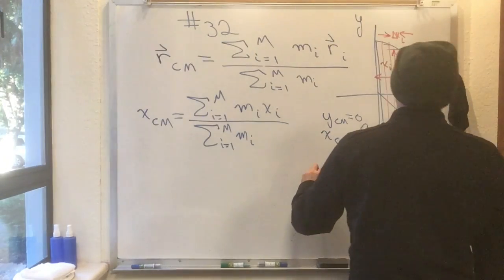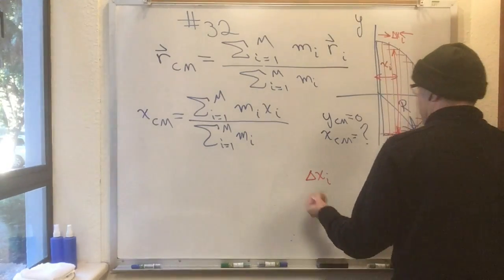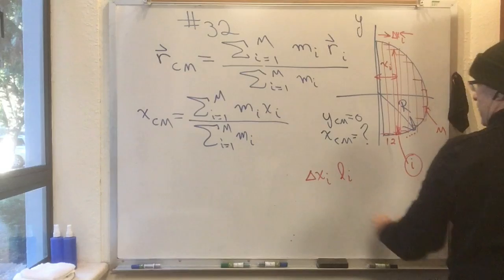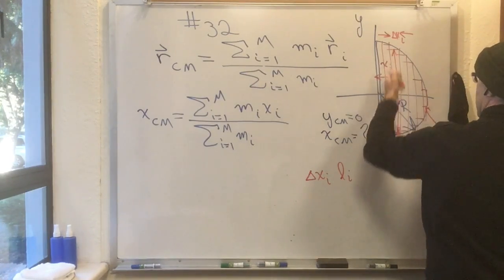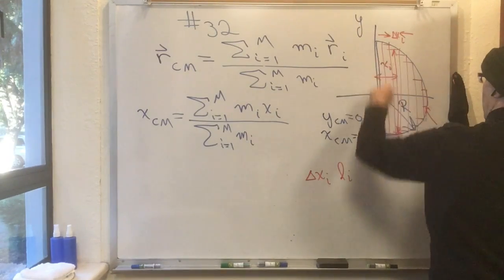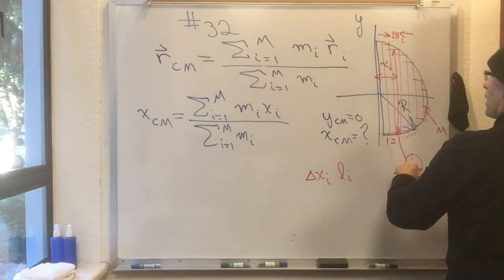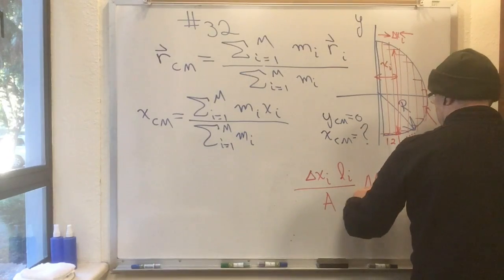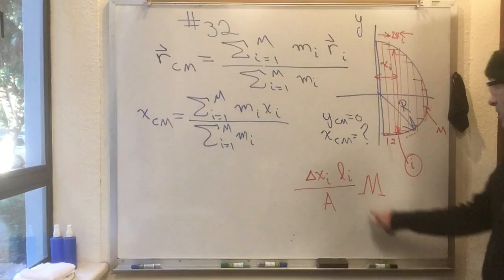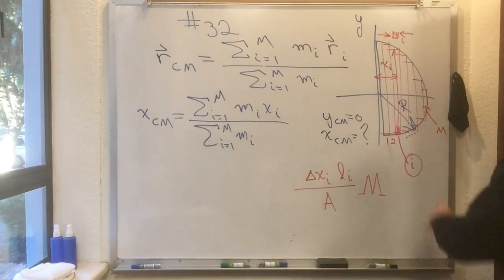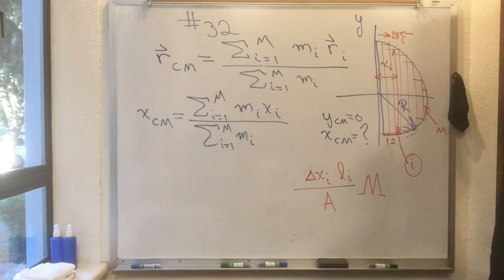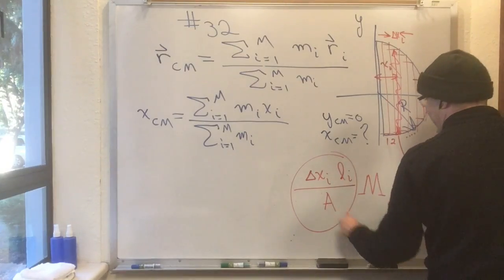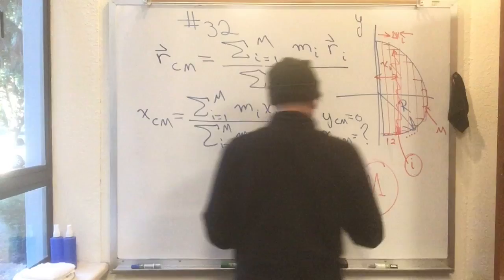Because the area of the i-th strip is delta x sub i. Let's give the height a name. Let's call it l sub i. So, that whole length there is l sub i. Its width is delta x sub i. And, this area is some fraction of the total area. And, that's going to tell us what fraction of the mass of this plate we have. So, whatever the total area is of the plate, times the total mass m of the plate, which we'll use capital M with serifs to be the total mass of the plate. Not to be confused with this m, which is just numbering us from 1 to m. Okay, so, this strip has that fraction of the total mass because it has that fraction of the total area.